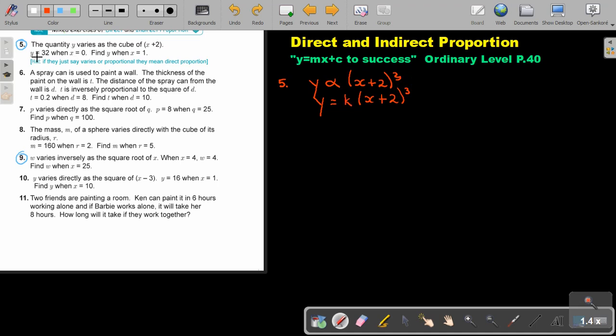So they must give me more information. When y is 32, x is 2. So let's fill it in. So y is 32, x is 2. And this is 2 times 2 times 2. It's going to be 8k. So divide 8, divide 8. So basically, the value of k is going to be 4.